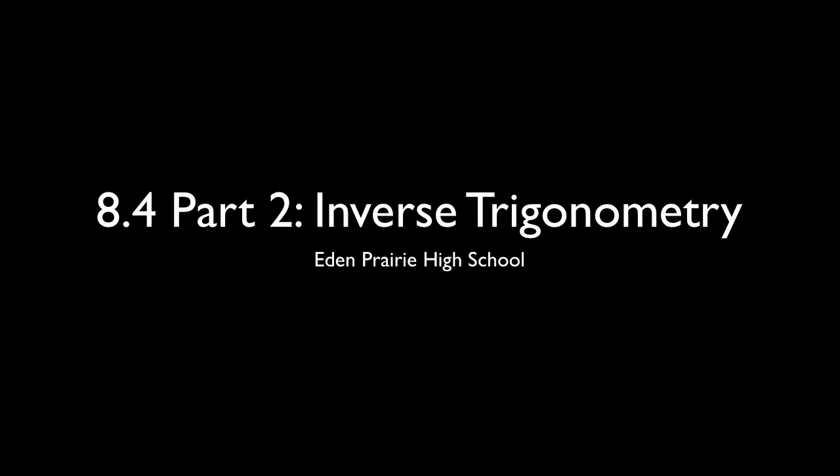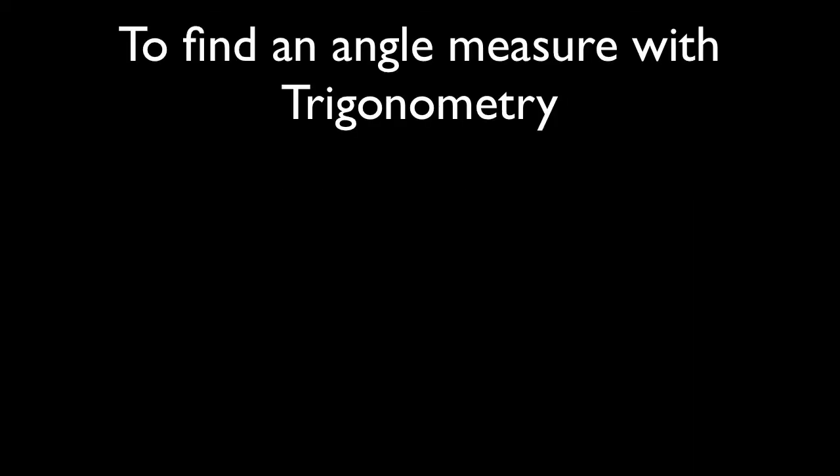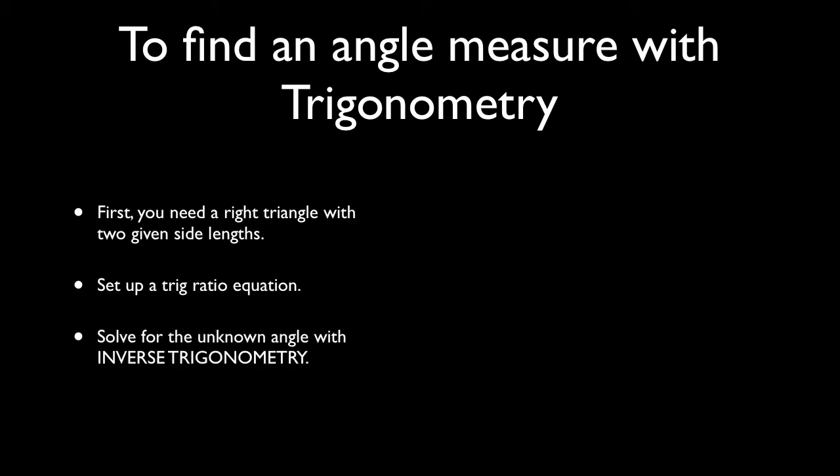Section 8.4 also deals with inverse trigonometry. We use inverse trigonometry when we want to find the angle measure of a right triangle given two side lengths. First, we need a right triangle with two given side lengths and a missing angle. We'll set up a trig ratio equation, and then we'll solve for the unknown angle using inverse trigonometry.